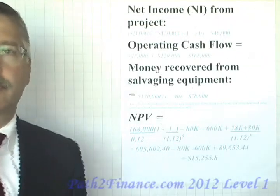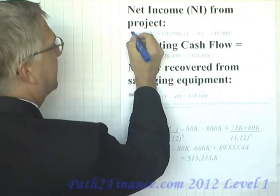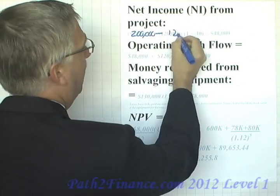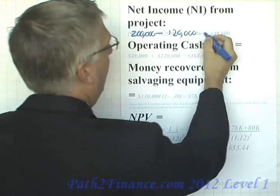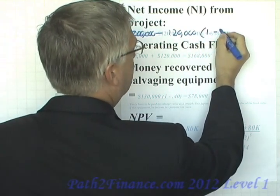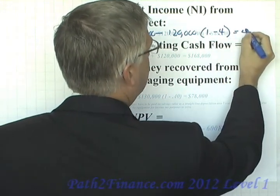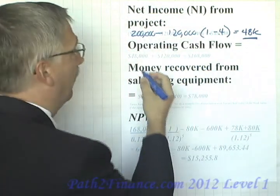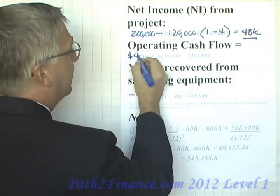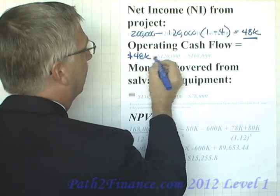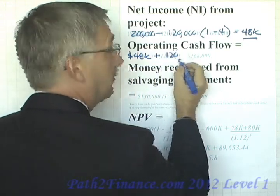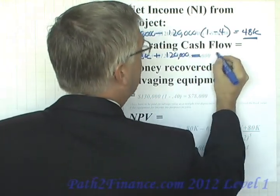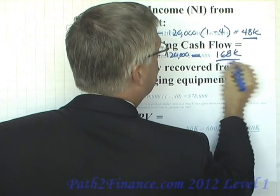Let's walk through the numbers. Our project saves us $200,000 a year. Our depreciation costs are $120,000. Tax effect there — 1 minus the 40% tax rate — gives us a net income of $48,000. Our operating cash flow: we take the $48,000 plus the depreciation, remember that's not a cash flow item, and that gives us an operating cash flow of $168,000.